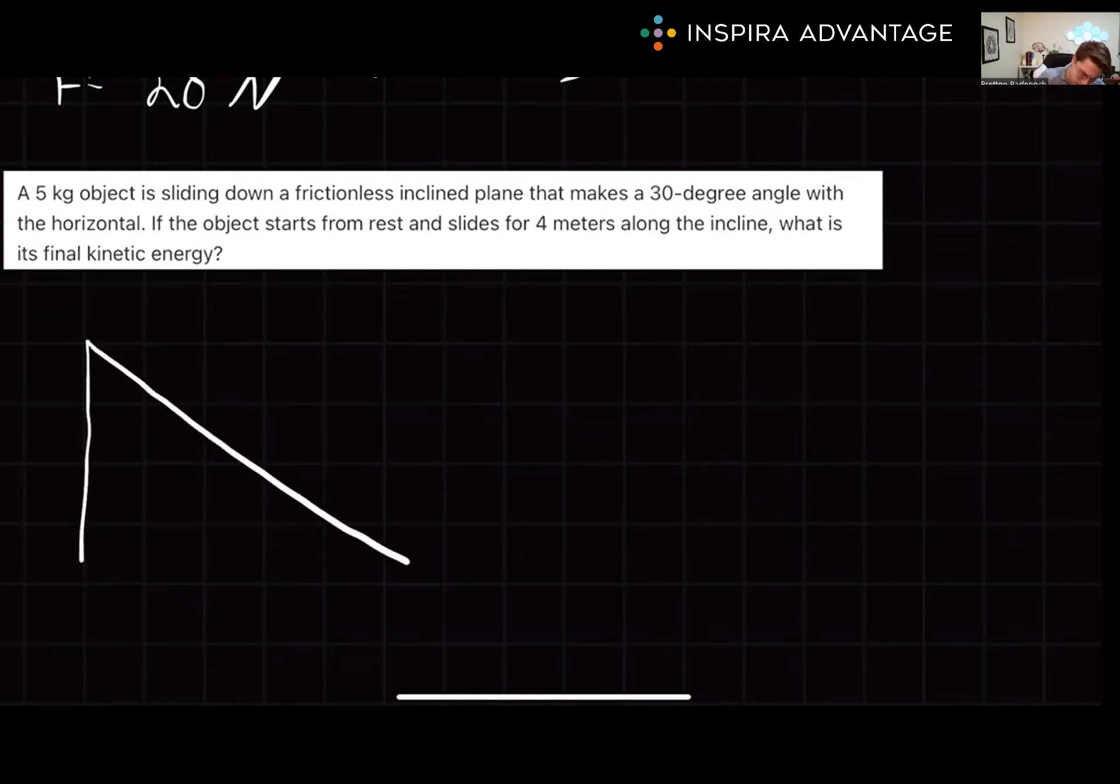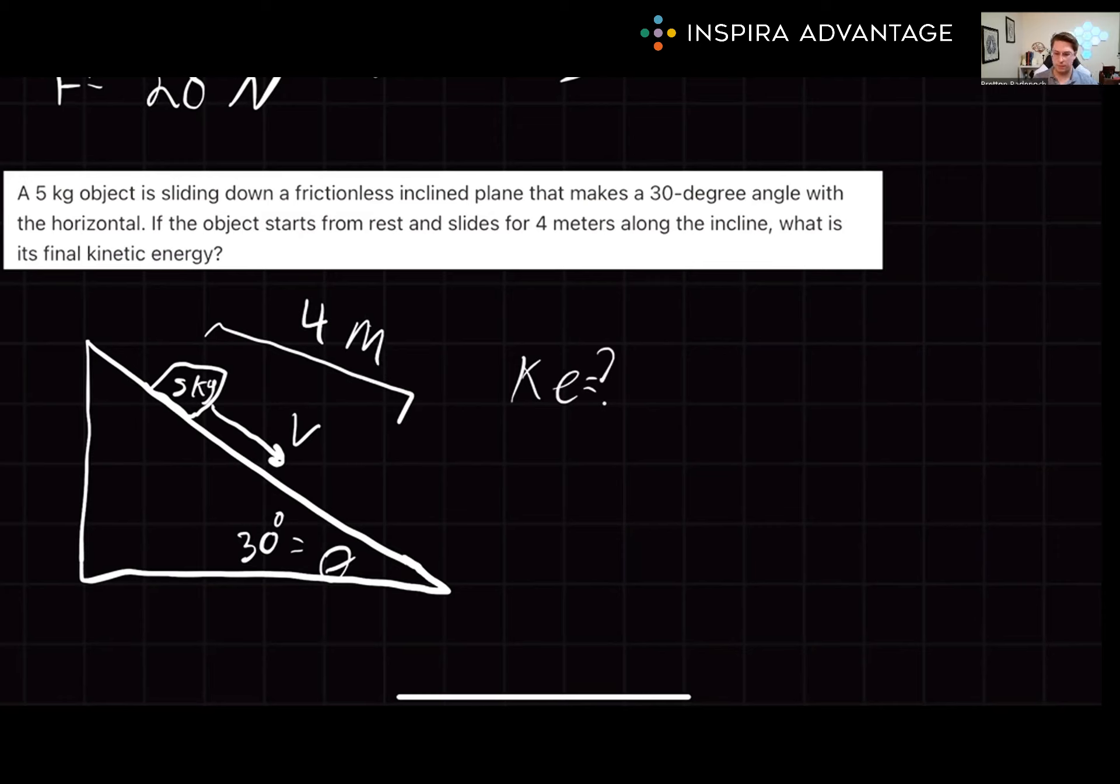The first thing I want to do is visualize this. I'm going to draw an incline plane, throw in my theta there. I'll draw a little box on my incline plane sliding down. We know theta is 30 degrees. I'll put this down as our velocity vector V. We know it's moving a distance of four meters. And we're solving for its kinetic energy. So we'll say that equals, we're not sure.